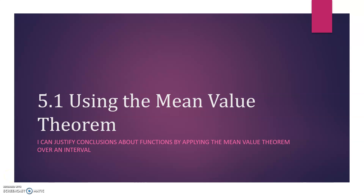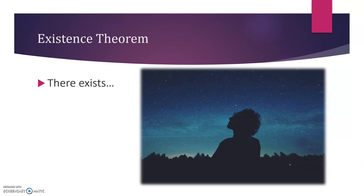Chapter 5 is all about using derivatives to analyze functions — looking at how the behavior of the derivative tells you something about the function itself. Section one is about a theorem called the Mean Value Theorem, and it's a major justification theorem for the AP test, kind of like the Intermediate Value Theorem. Just like the IVT, it's an existence theorem — it's not telling you exactly where something happens, it's just promising you that it exists.